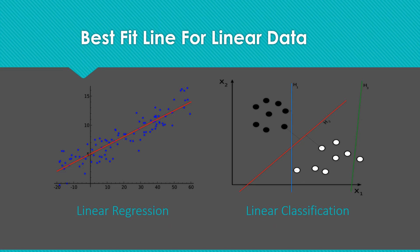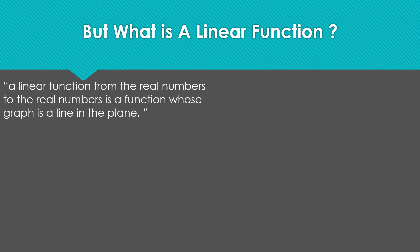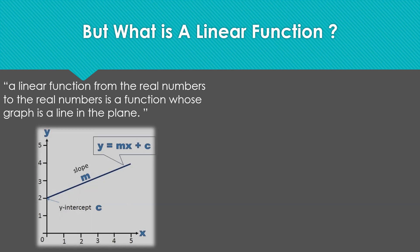But mathematically, what is linear data or a linear function? According to the formal definition, a linear function from the real numbers to the real numbers is a function whose graph is a line in the plane. So it's pretty easy to visualize linear functions in two dimensions. Let's look at it. This in front of you is a graph of a linear function in two dimensions. The formula is y equals mx plus c, where m is the slope and c is the y-intercept.